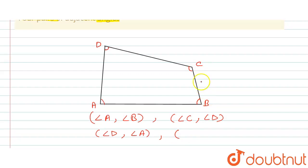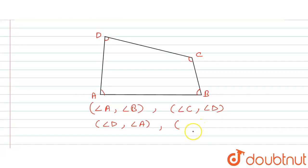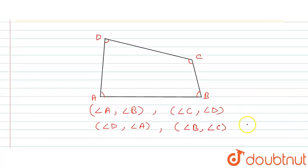Here we will take out the arm, common arm or side which is BC. So here we can say that angle B and angle C are the adjacent angles. So this is the four pairs of adjacent angles of a quadrilateral.